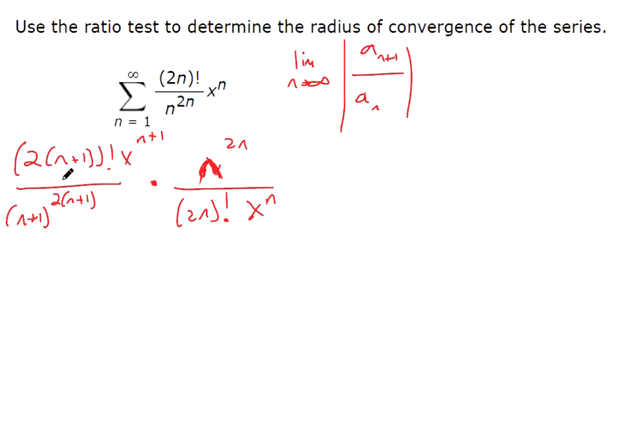So there's some things that are going to cancel out, some things that are not. So here inside this factorial, this is like 2n+2, right? Because you can distribute the 2 to everything on the inside. So this is 2n+2 factorial. That means we've got 2n+2 times 2n+1 times 2n factorial, because the factorial is multiplying all those descending integers.